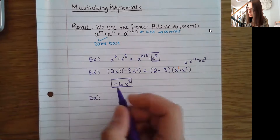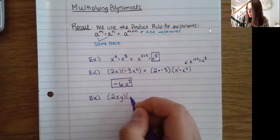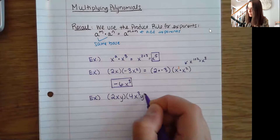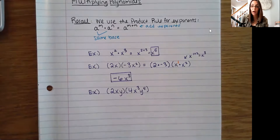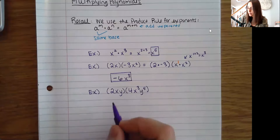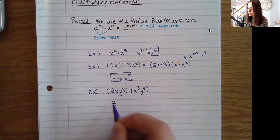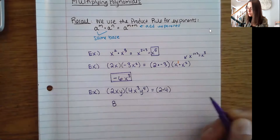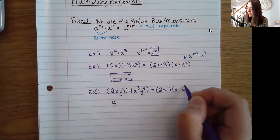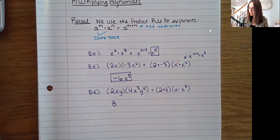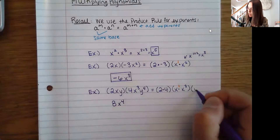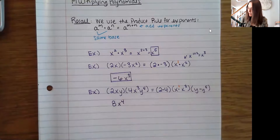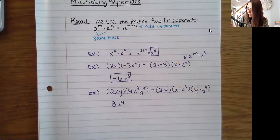I'm going to do one more: 2xy times 4x cubed y to the fifth. Those numbers out front don't have exponents and they're different, so we just multiply them as usual — 2 times 4 is 8. Now I match up the x's: x to the first power times x to the third power, adding those together gives x to the fourth power. For my y's, I have y times y to the fifth, which is y to the first power, and 1 plus 5 is 6. So I get 8x to the fourth y to the sixth.